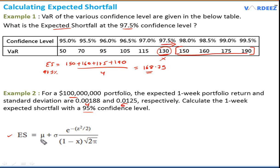The formula says we take the mean μ, add the standard deviation σ, and adjust by e to the negative z² divided by 2. The negative is because we're going to the left tail. We square the z-score and divide by 2. The denominator has 1 minus x, which is 1 minus the confidence level, or alpha, multiplied by the square root of 2π.